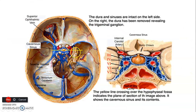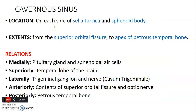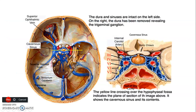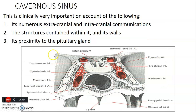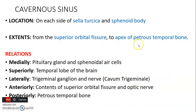The cavernous sinus is located on each side of the sella turcica — the hypophysial fossa where the pituitary gland is housed — and the body of the sphenoid bone. It extends from the superior orbital fissure to the apex of the petrous temporal bone. Its medial relations are the pituitary gland and sphenoidal air sinus, within the body of sphenoid.